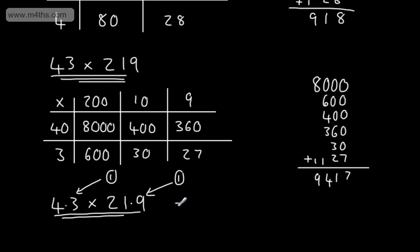All I would then do is carry out this calculation, but make sure that my answer also finished with two digits after the decimal. So, for example, now we could say that this, we know it's going to be 9417, but as we started with two digits after the decimals in total, we need to end with two. So it becomes 94.17.